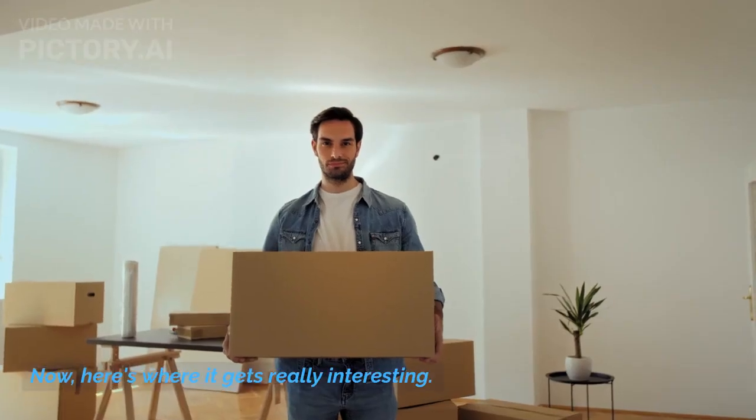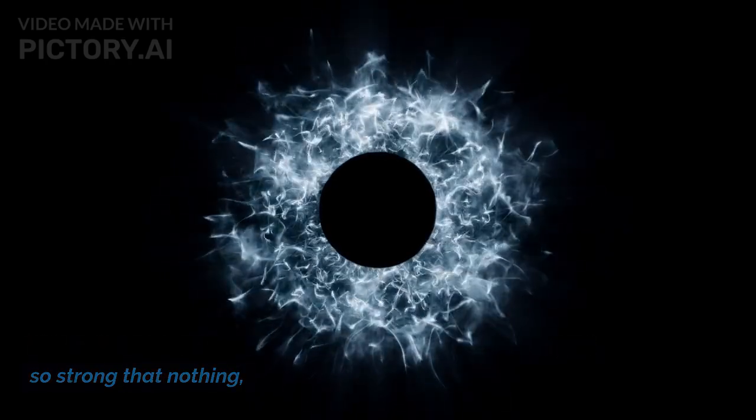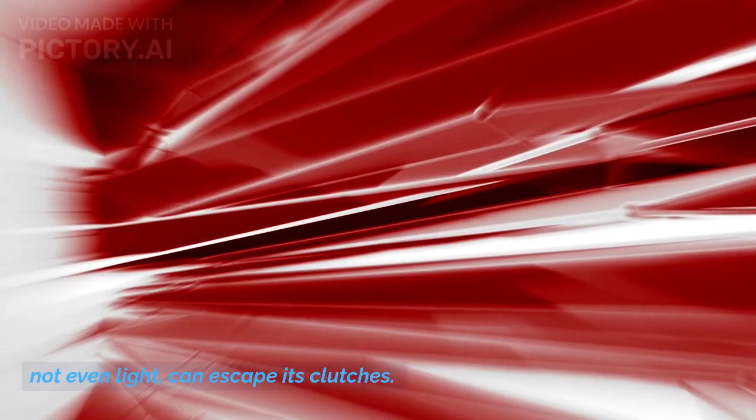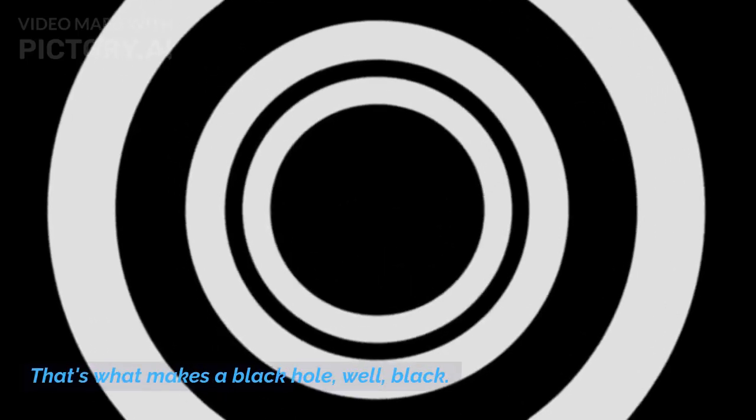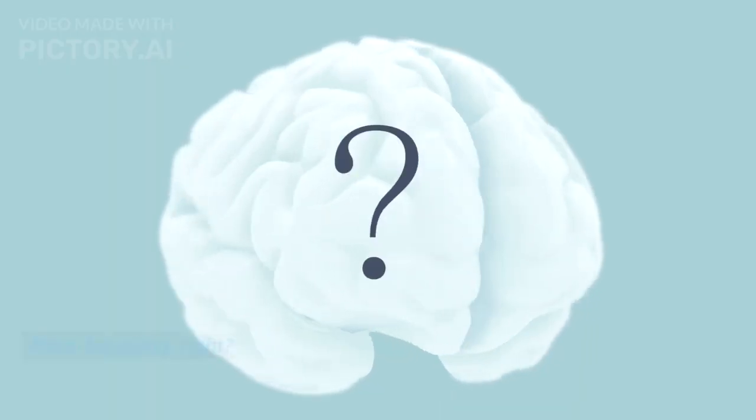Now, here's where it gets really interesting. This collapse is so severe that it creates a gravitational pull so strong that nothing, not even light, can escape its clutches. That's what makes a black hole, well, black. It's a region of space where the laws of physics as we know them break down. Mind-boggling, right?